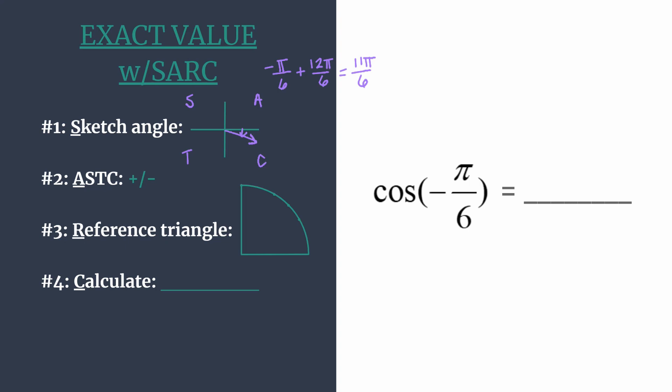So we're looking at our angle with its terminal side in the fourth quadrant, and we're trying to find the cosine. We see that C tells us cosine and secant will be positive in this fourth quadrant. So our exact value will be positive.